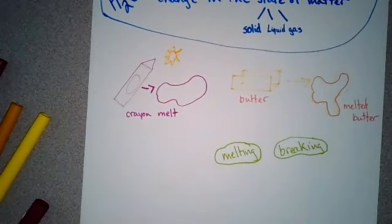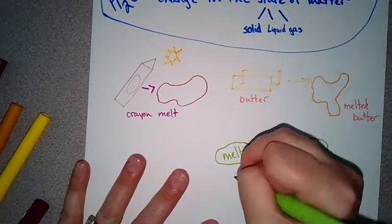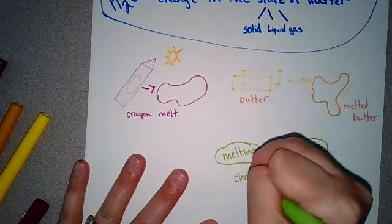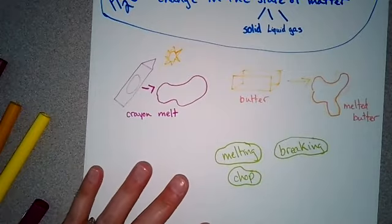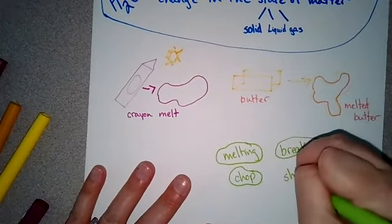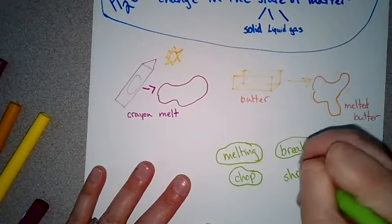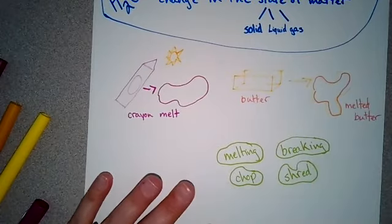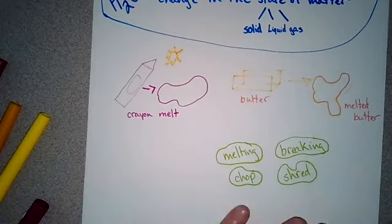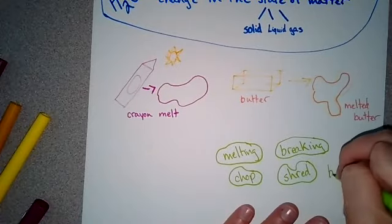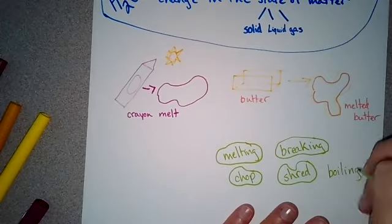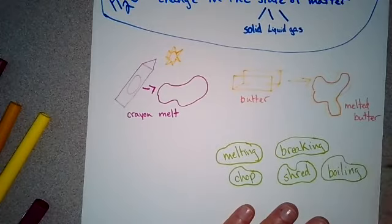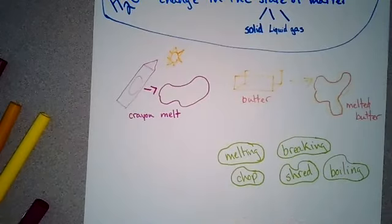Another one for physical changes is chop. If you chop something up. If I chop up a carrot, it's just little baby pieces of carrot. Shred, if I shred paper, it's still just paper. And then this is the one that gets children. Boiling. If I boil something, all I'm doing is changing it from a liquid to a gas. I am not changing its chemical makeup.